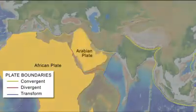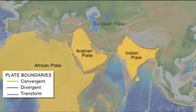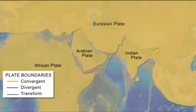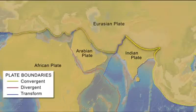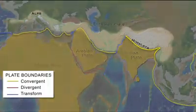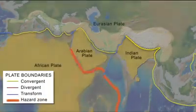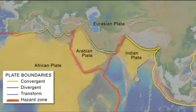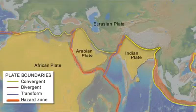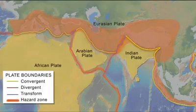The African, Arabian, and Indian plates collide with the southern margin of the Eurasian plate along a 1,200 kilometer convergent boundary. This has resulted in a mountain chain that stretches from the Alps to the Himalayas. Whereas divergent, transform, and subduction zone plate boundaries produce relatively narrow belts of earthquakes, continent-continent collision produces broad earthquake zones.